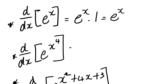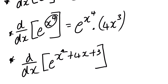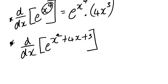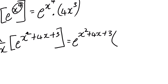The derivative of e to the power x⁴ is e to the power x⁴ multiplied by the derivative of x⁴, which is 4x³. For the last one, the derivative of e to the power (x² + 4x + 3) is e to the power (x² + 4x + 3) multiplied by the derivative of the exponent, which is 2x + 4.